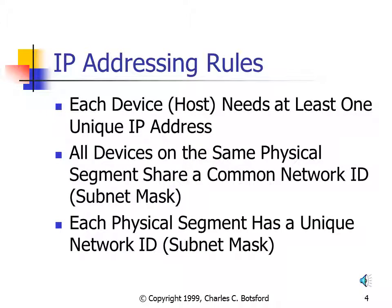There are a couple of very important IP addressing rules. Each device or host needs at least one unique IP address — specifically, a unique IP address for each connection to the network. If a computer has three different network interface cards, each network interface card would require a unique IP address. Also, all devices on the same physical segment share a common network ID, or network portion, of their IP address. They will have a unique host ID, but all devices on a physical segment share a common network ID as specified by the subnet mask.